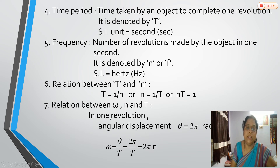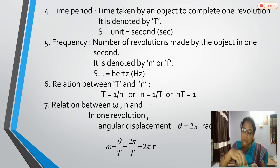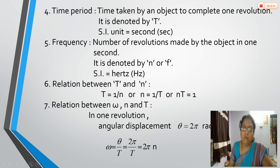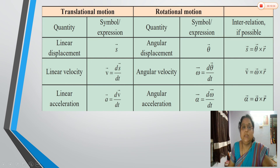There is an important relation between angular velocity, frequency, and period. When an object completes one revolution, the angular displacement is 360 degrees, that is 2π radians, and the time taken is one period T. Using ω = θ/t, we get ω = 2π/T. Since 1/T = n (frequency), we also get ω = 2πn. These two relations — ω = 2πn and ω = 2π/T — are very important for circular motion.